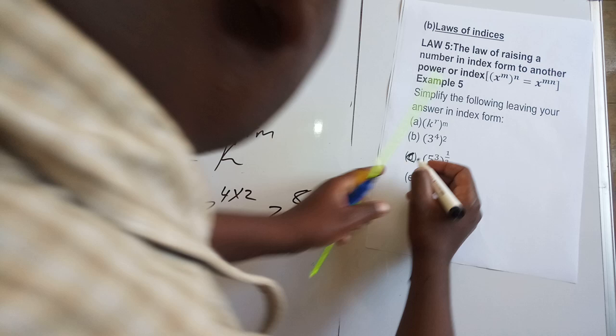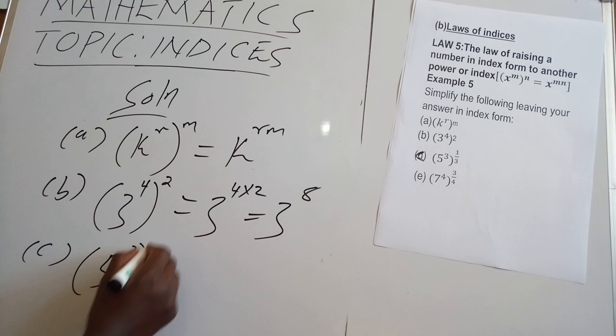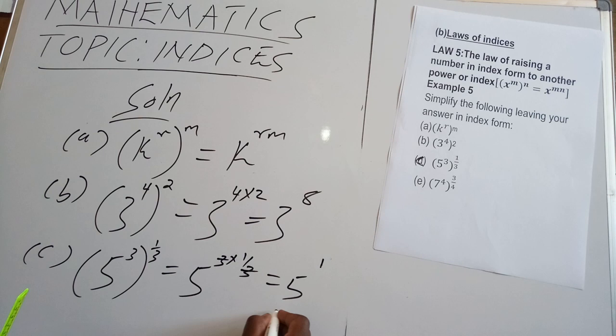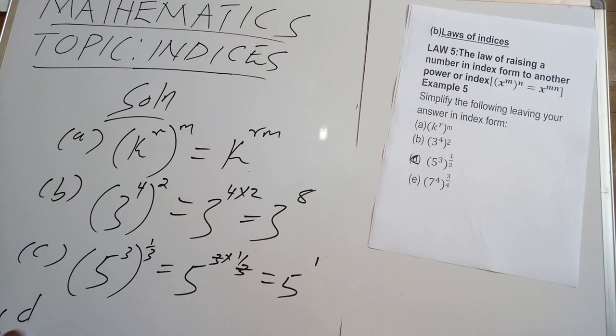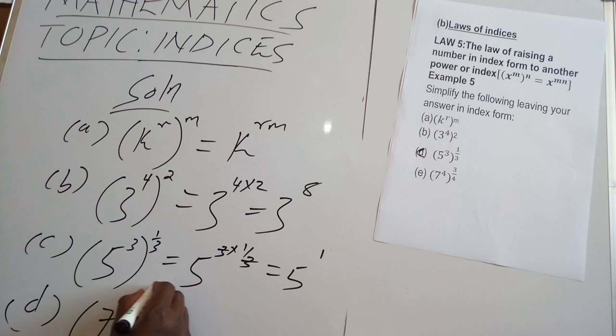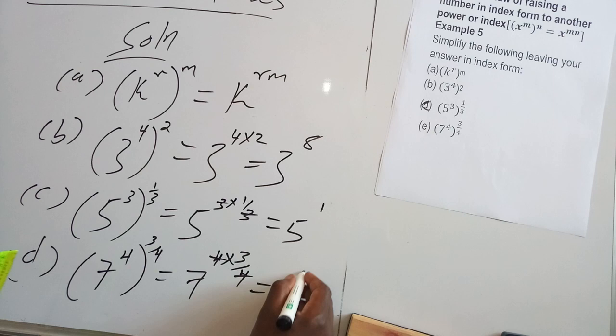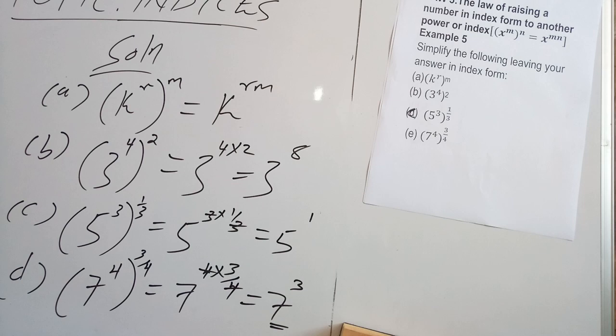Part C: we have 5 power 3 raised to power a third. This gives you 5 raised to power 3 times one-third. In the end, the 3 and one-third cancel, and we have 5 power 1. Part D, our last example: 7 power 4 raised to power 3 power 4. This would be 7 power 4 times 3 power 4, giving you 7 power 3 as the eventual outcome.